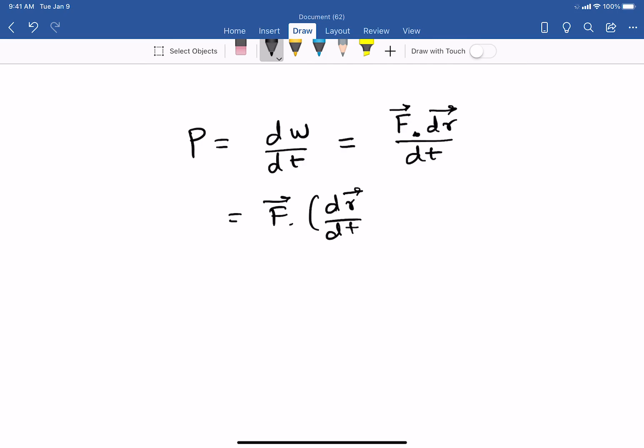Now we know what dr/dt is, we've seen this in earlier chapters. dr/dt is simply the velocity, the derivative of the position vector is simply the velocity vector. So we can write this as F·v.